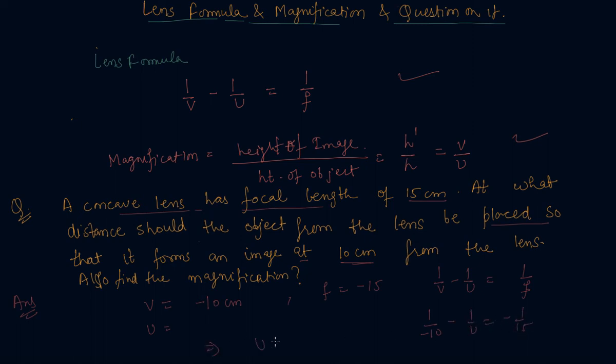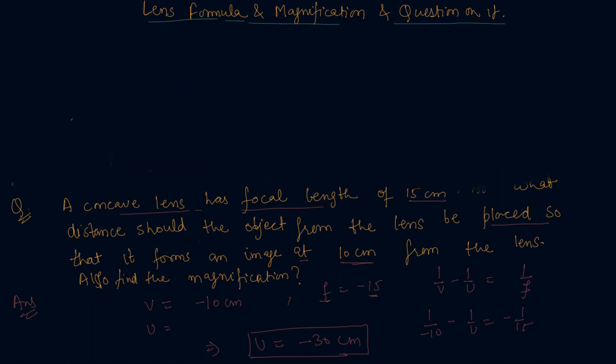From here, U is coming out to be minus 30 centimeter. It is also on the left hand side and the position is at 2F. It means it is at 2F position.